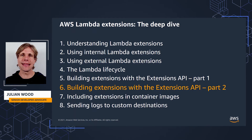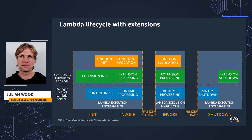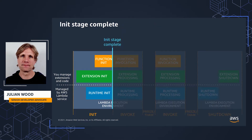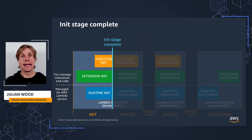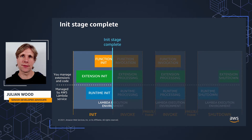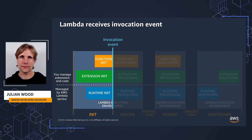This video continues with the invoke and shutdown phases. I went through the Lambda lifecycle in depth, showing the API calls and the runtime and extensions make to interact with Lambda. I had finished at the end of the init stage. The init stage completes after the runtime and each registered extension say they are ready by sending next API requests. The function has also initialized, all the setup tasks are complete. Lambda is ready to progress to the invoke stage.